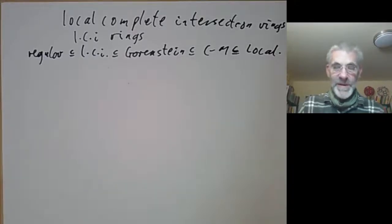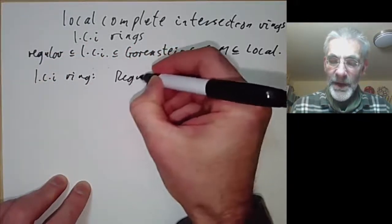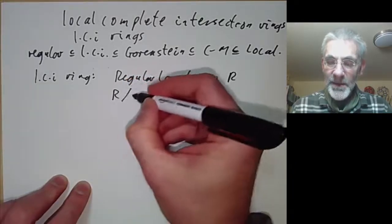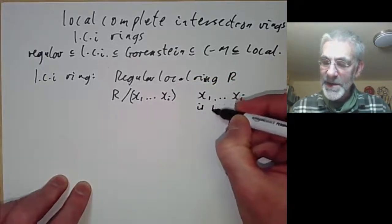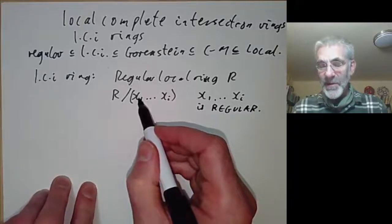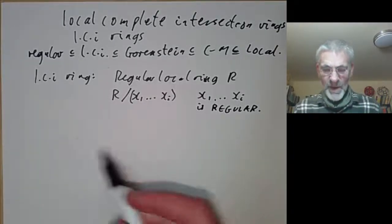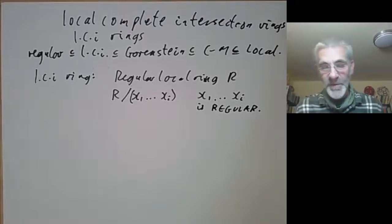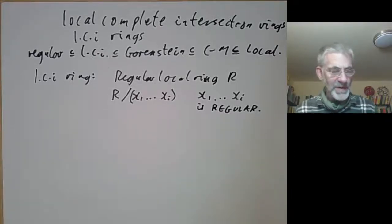In previous lectures we covered Cohen-Macaulay rings, Gorenstein rings, and regular rings, so now we're going to do the last case: local complete intersection rings. A local complete intersection ring is given by taking a regular local ring R, and the local complete intersection is R modulo the ideal generated by x1 up to xi, where x1 up to xi is a regular sequence — meaning x1 is a non-zero divisor and a non-unit, and x2 is a non-zero divisor and a non-unit in R over x1. When I first came across this definition, my reaction was that it looked like a completely artificial and rather silly definition, but it does turn out to be a really fundamental and natural concept, although possibly not a completely intuitive one.